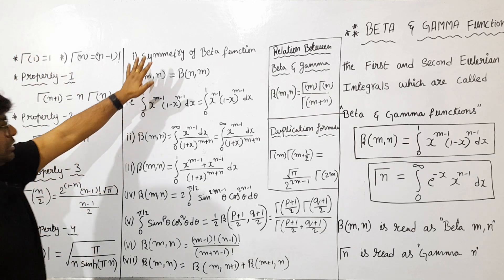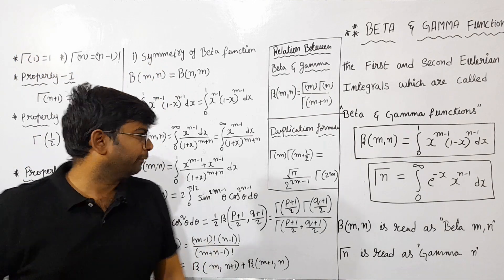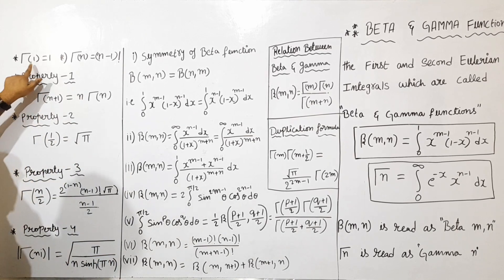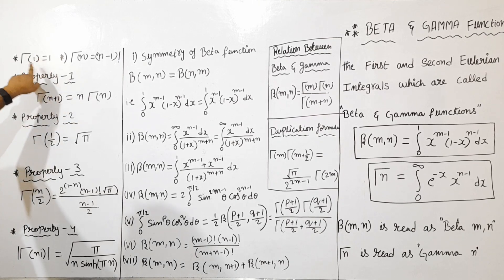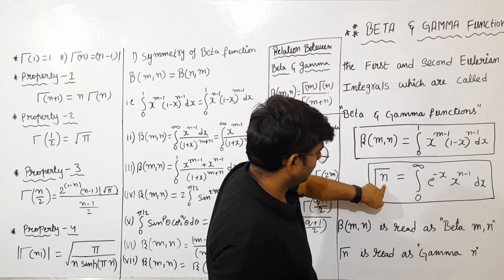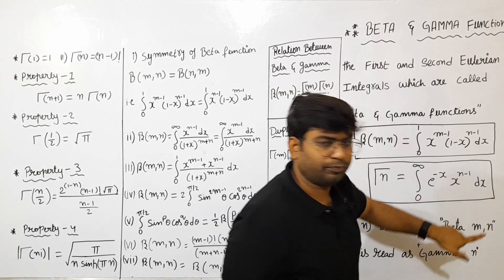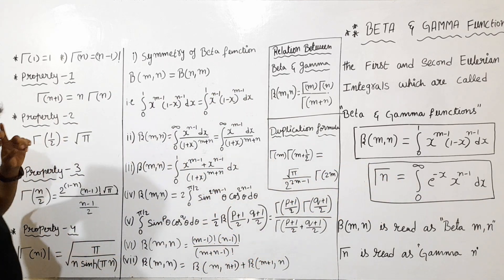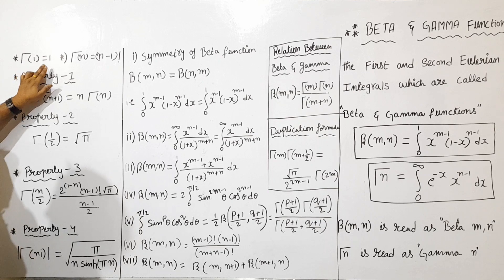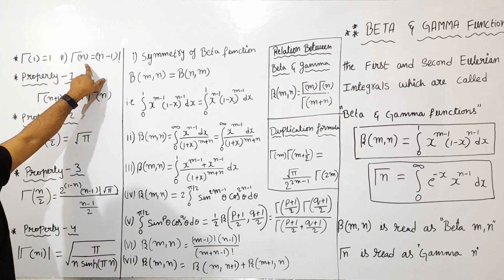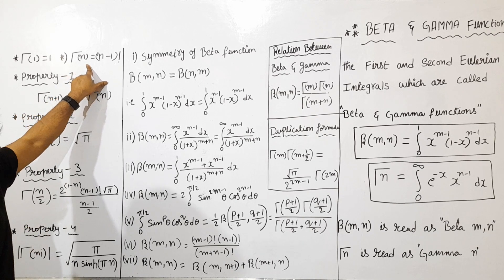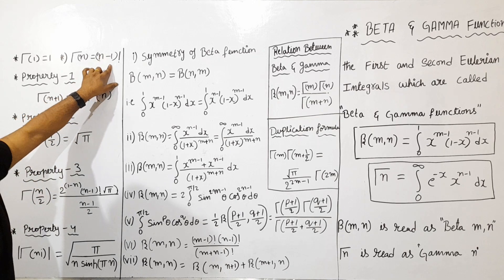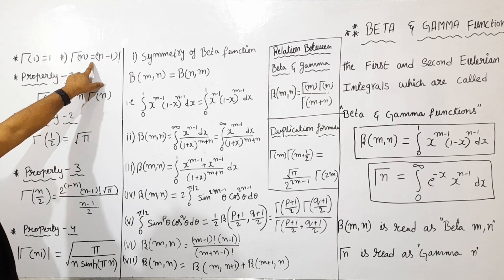The properties of Gamma and Beta are very easy to explain. First property: Gamma(1) is equal to 1. We can prove this — using the definition, the integral gives x to the power of n minus 1 evaluated, and the fixed value is Gamma(1) equals 1. If Gamma(n) is equal to 1, 2, or 3, then Gamma(n) is equal to n minus 1 factorial. This is a very simple formula.